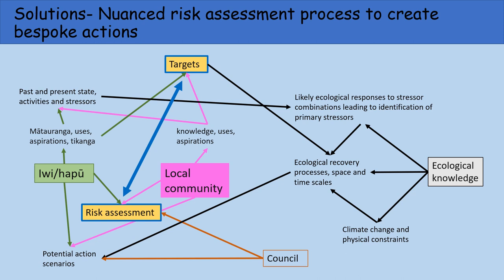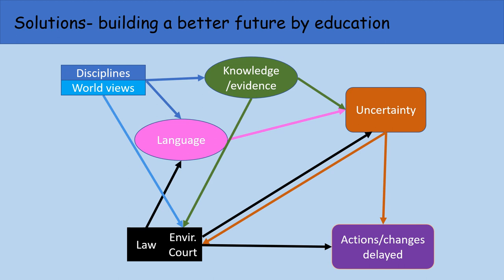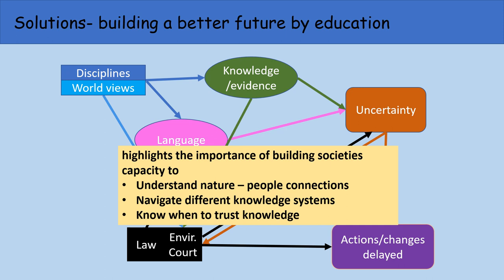Finally, to move and expand further out into the future: at the present, we are operating in a social system where disciplines and worldviews use different types of knowledge that may not talk to each other. The language used by the law, disciplines and worldviews may all be slightly different, and this can add to uncertainty and result in plans, policies and decisions ending up in the environment court — which in itself is a system that delays change. But all of this highlights the importance of building the capacity of everyone to understand nature-people connections and how to navigate different knowledge systems, and most importantly in these days of fake facts, when to trust and how to judge the value of knowledge. Thank you very much. Nā mihi.